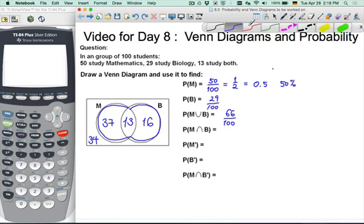And then, so for the upside down one, it should be the intersection, just the red part here. So it'll be 13 out of 100 study mathematics and biology.